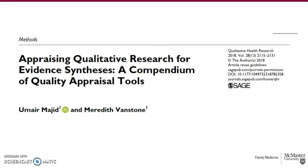A lot of the content in this video is covered in a paper I wrote with a former master's student. In that paper we write specifically about the challenges of appraising the quality of studies conducted by other people in the context of an evidence synthesis, but we also lay out some of the key tenets and controversies of quality criteria in qualitative research. The paper also offers a list of tools that have been created to assess or appraise the quality of primary qualitative research studies, which will give you a sense of the diversity of approaches that exist.